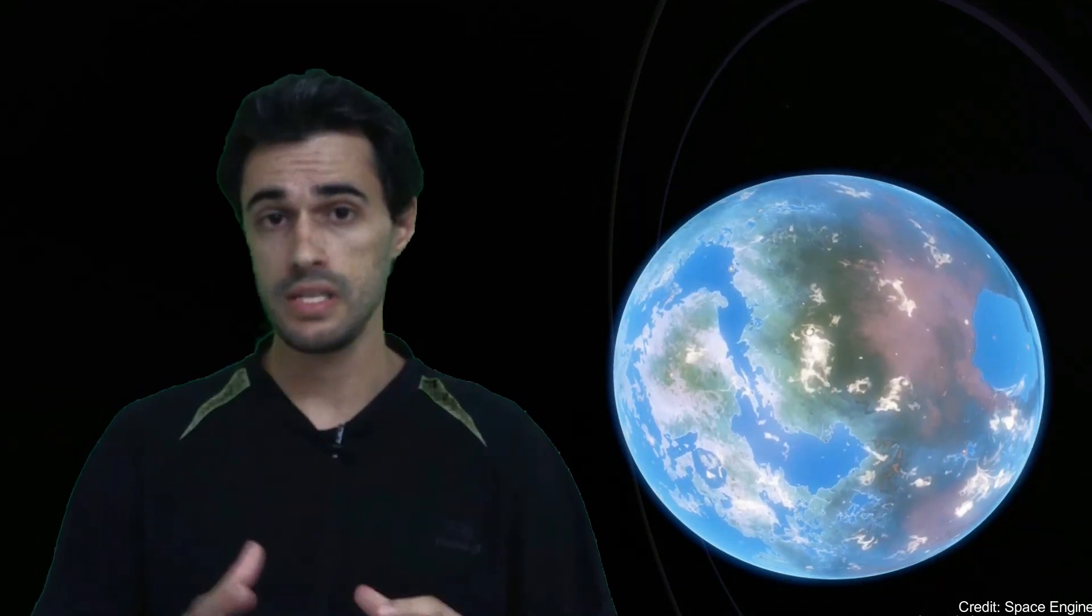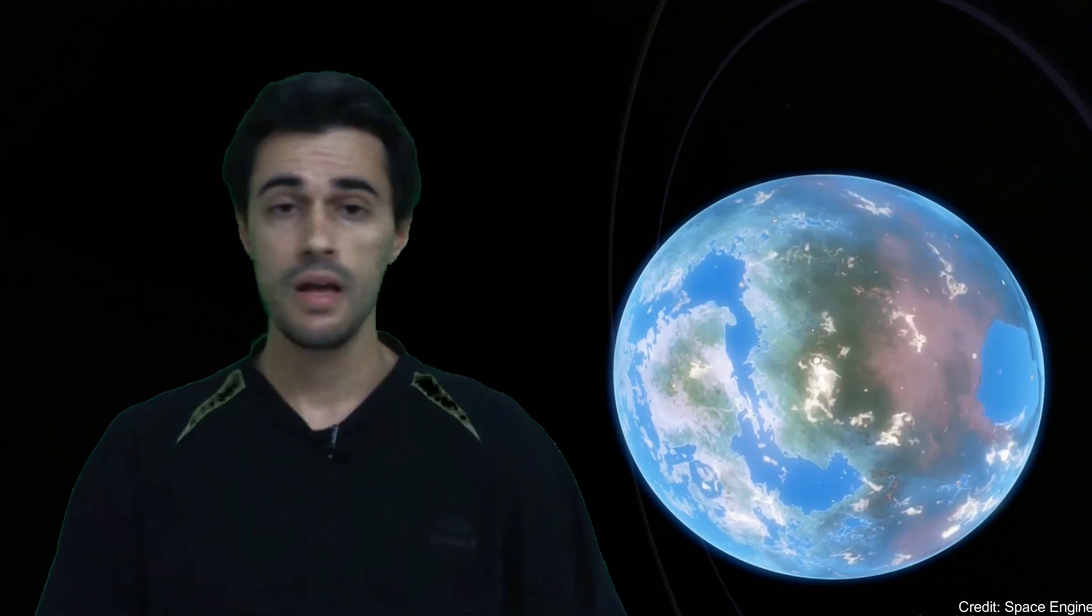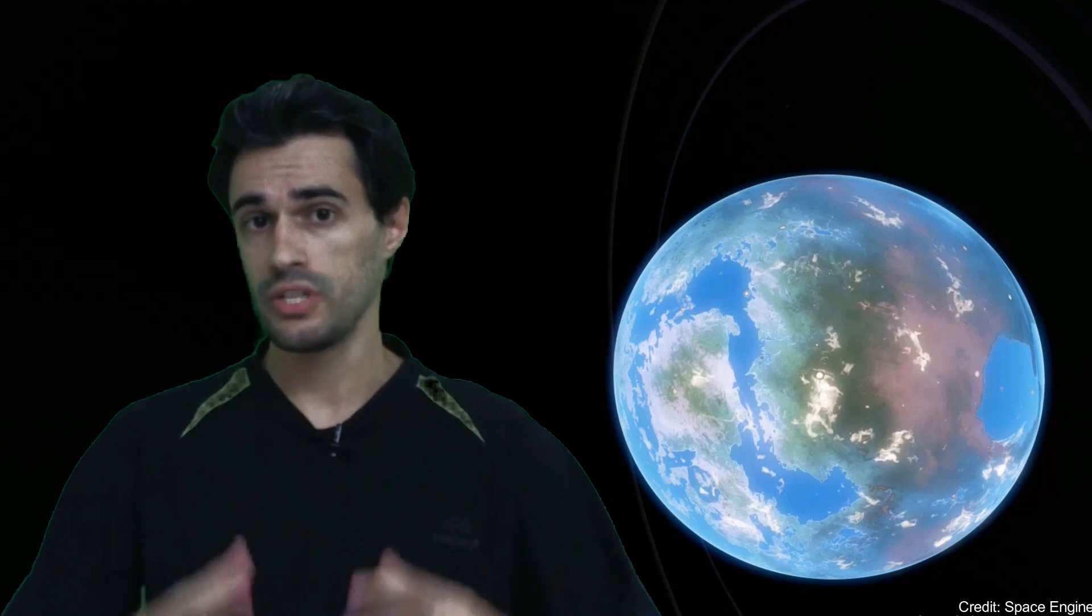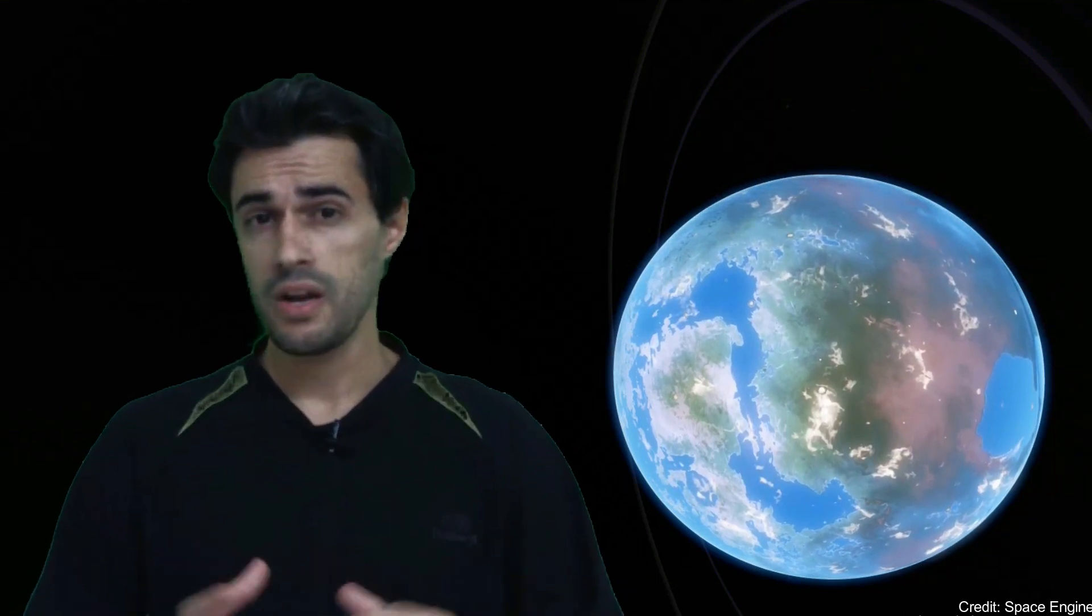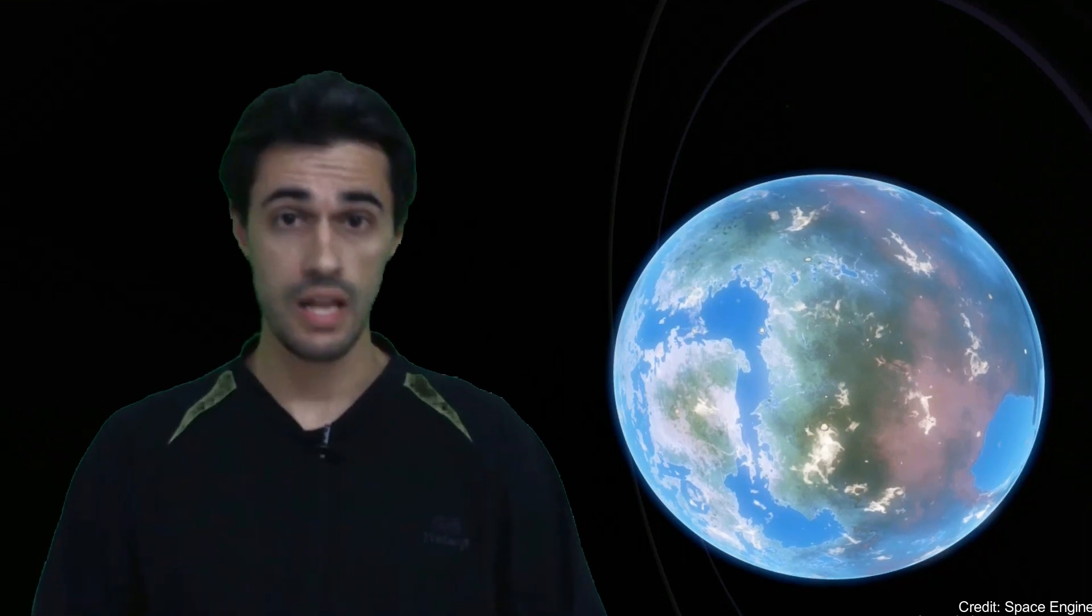Finally, Proxima b orbits the red dwarf star Proxima Centauri, 4.2 light years away. The exoplanet is 87% similar to Earth. It has an orbital period of 11 days, a minimum mass 30% higher than Earth, an average radius 10% higher, and an equilibrium temperature of 28 degrees less.